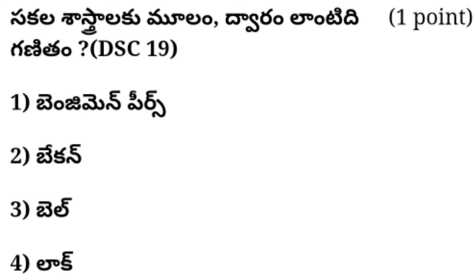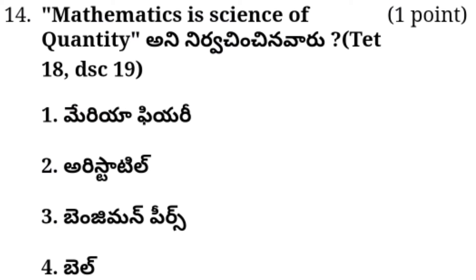Codes, patterns, friends. You can find the link in the description. Mathematics is the science of quantity. Option 1: Meriah Fury. Option 2: Aristotle. Option 3: Benjamin Pierce. Option 4: Bell. Answer in comment box. The answer is option 2: Aristotle. Mathematics is the science of quantity — Aristotle.